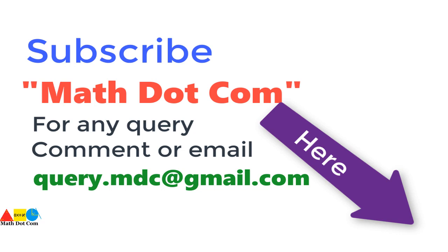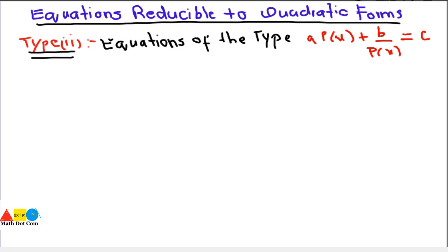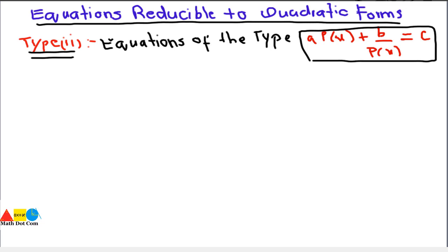Hello everyone. Today's lecture we are going to learn how you can use the equation of the form a·P(x) + b/P(x) = c and reduce it to the quadratic equation, and then solve it accordingly. So let's take a start from the example in order to understand the method.